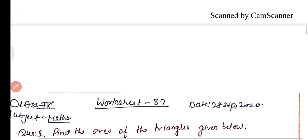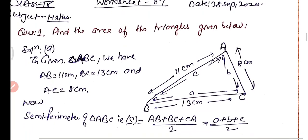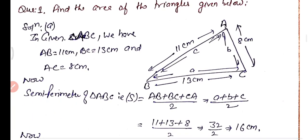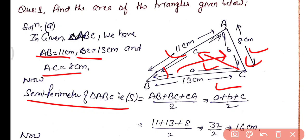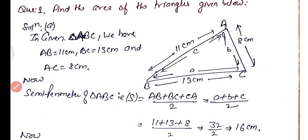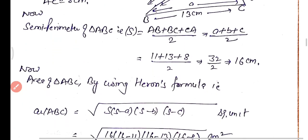Now we have practice questions. Part one: find the area of the triangle shown on screen — triangle ABC where AB equals 11 cm, BC equals 13 cm, and AC equals 8 cm. The semi-perimeter S equals (AB plus BC plus CA) by 2, that is (11 plus 13 plus 8) by 2, which is 32 by 2 equals 16 cm.